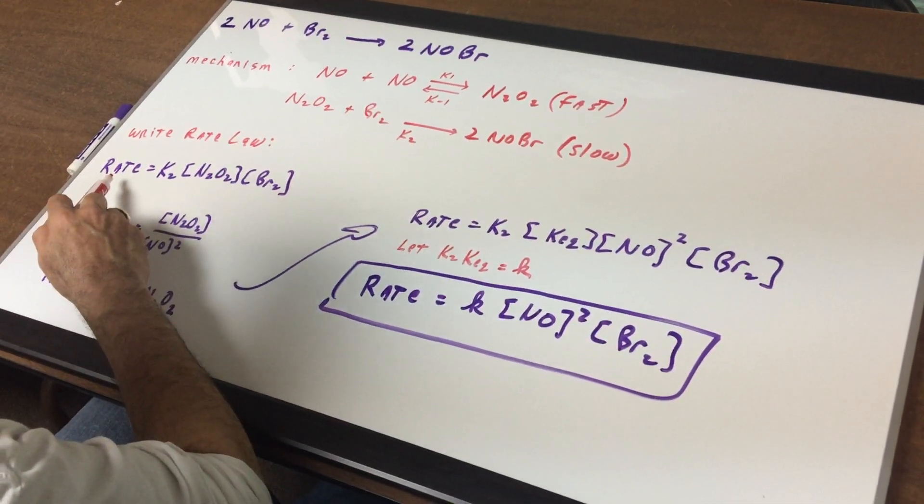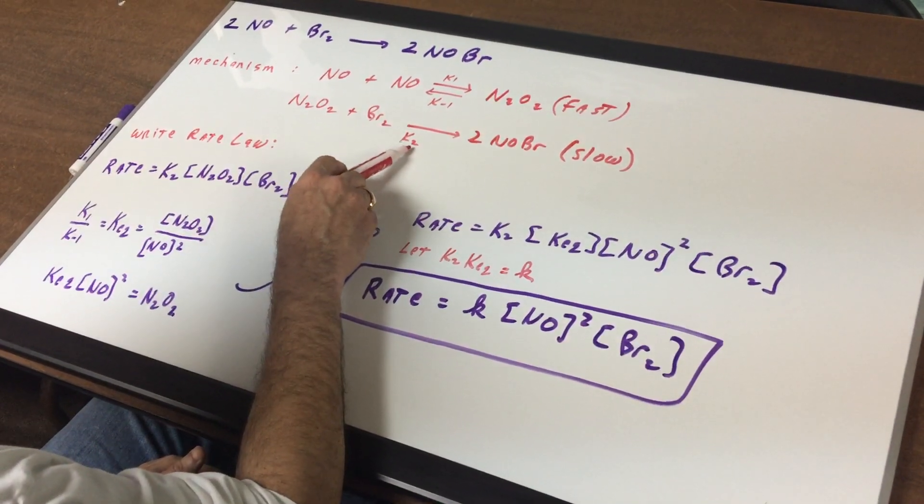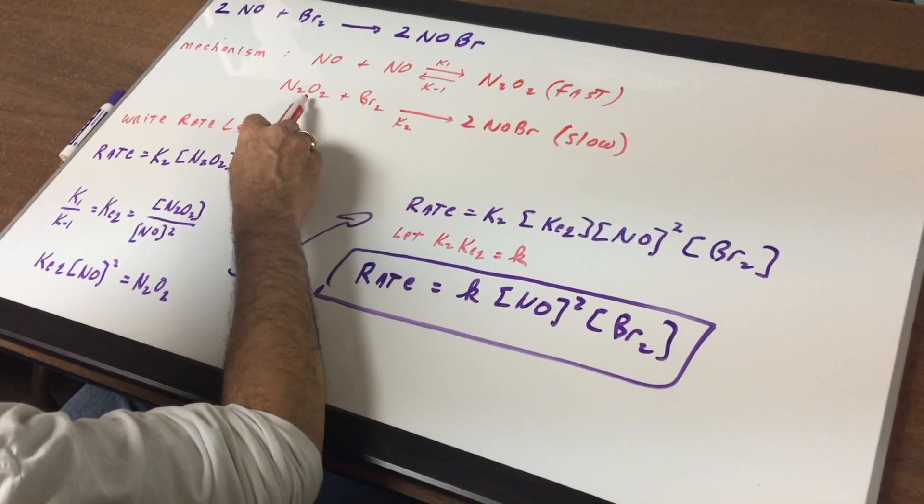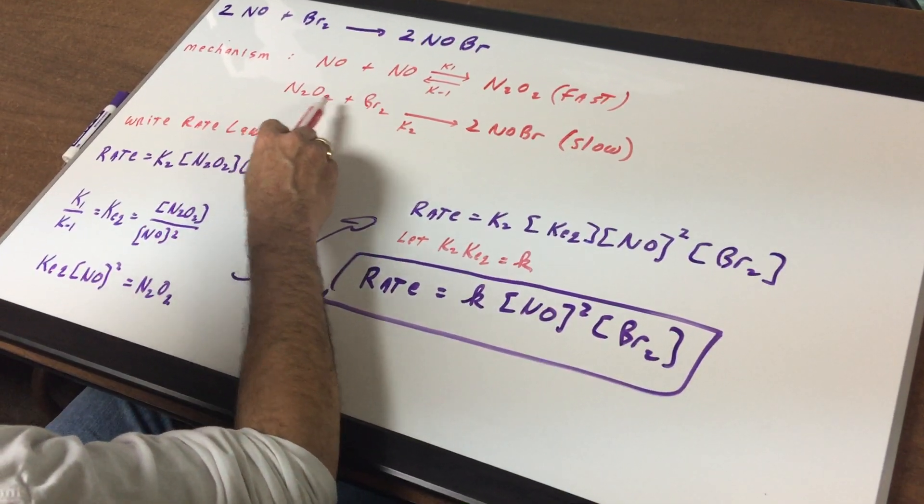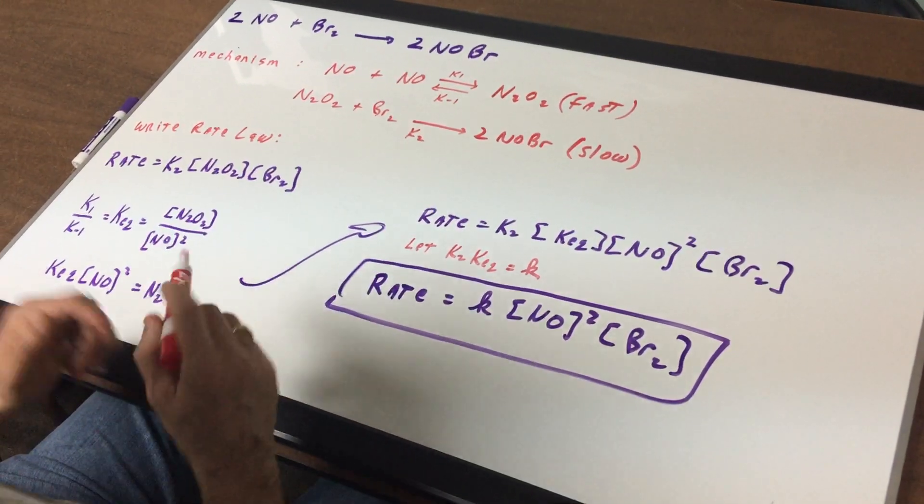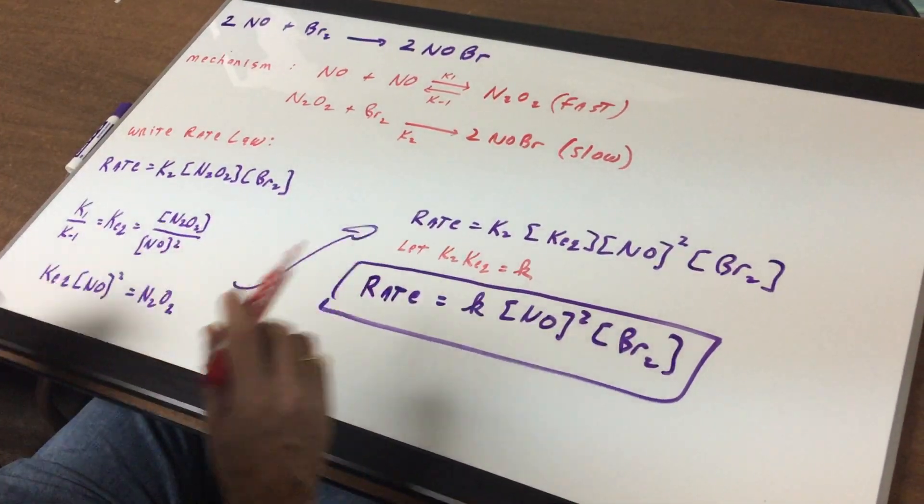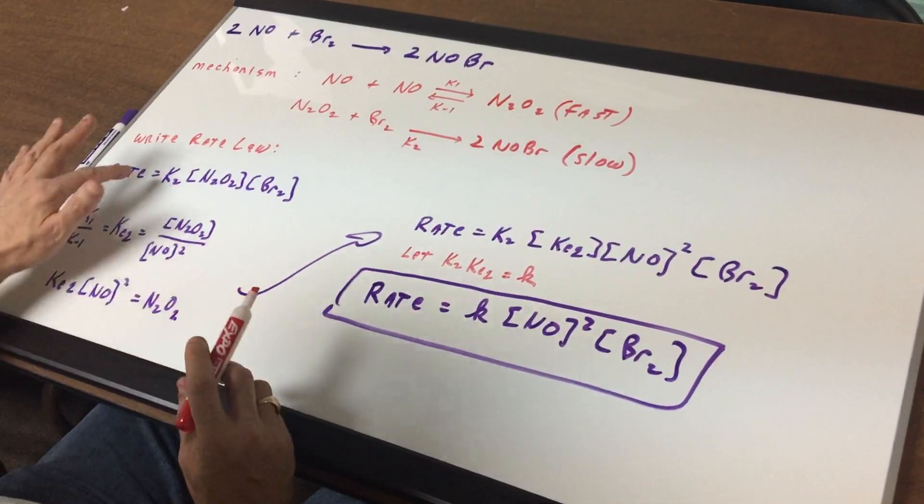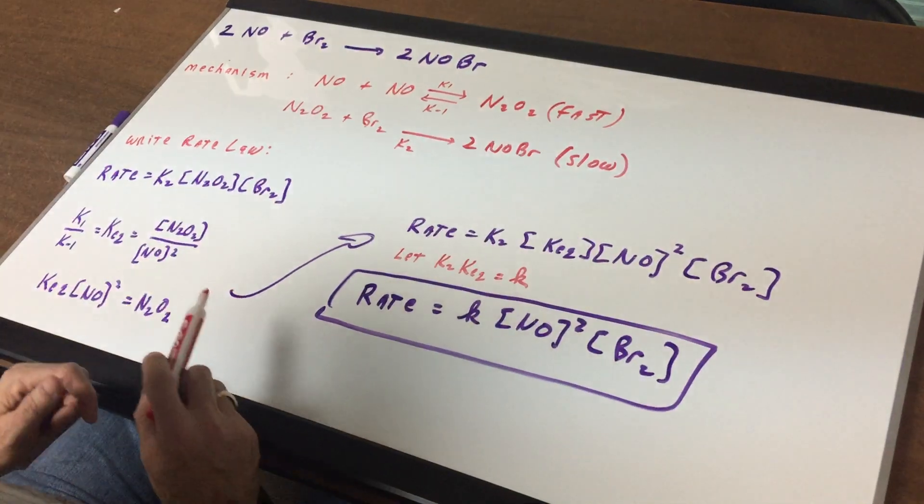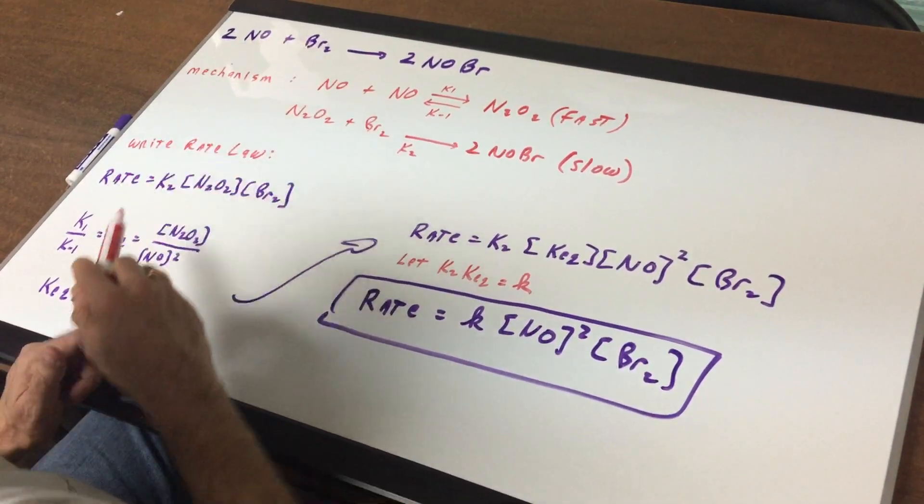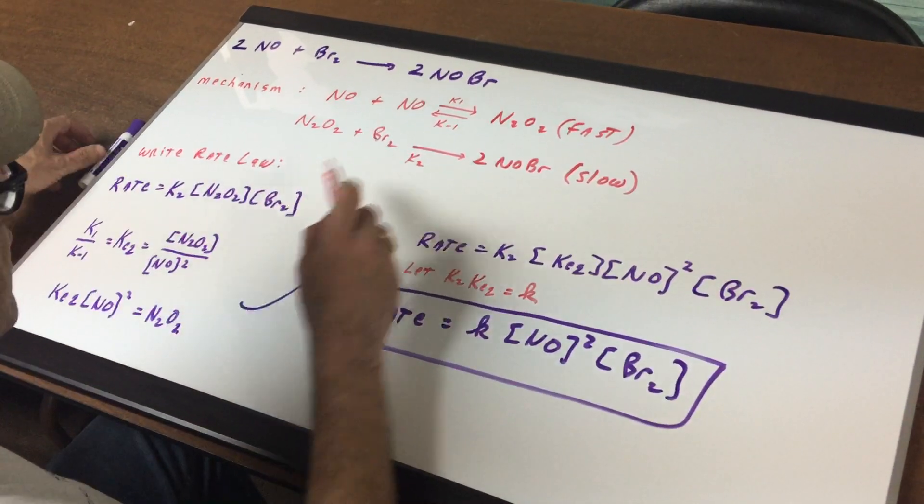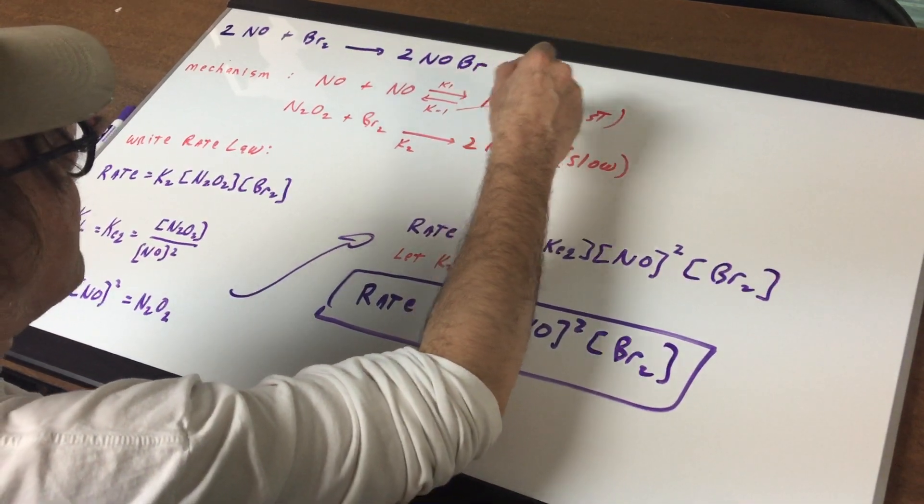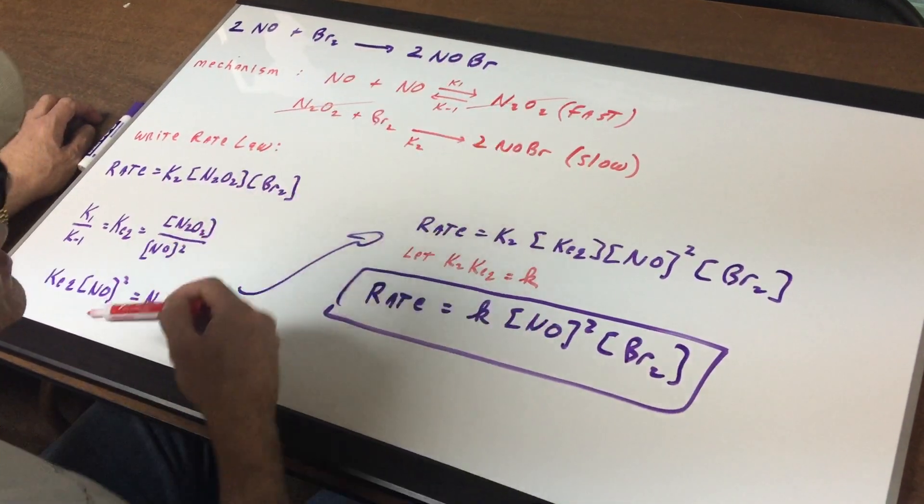So what we're going to do is we're going to say rate equals K2 multiplied by the two reactants: N2O2 and bromine. Now, hopefully we're done right this minute, that that's the rate law. But if you look at the equation, the equation has NO and Br in it. And N2O2, if you look from up here, is an intermediate because they would cancel out.